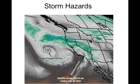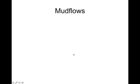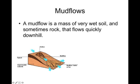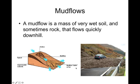The third type of hazard in California comes from storms. There are two different storm hazards we face. The first is a mud flow — a mass of very wet soil and sometimes rock that flows quickly downhill. When it rains heavily, the land, which is often very dry due to drought, doesn't have enough plants to hold the soil in place. So when rain does come, the soil turns to mud quickly and flows down the hill, creating a mudslide.